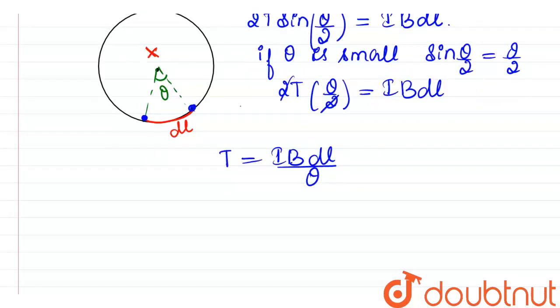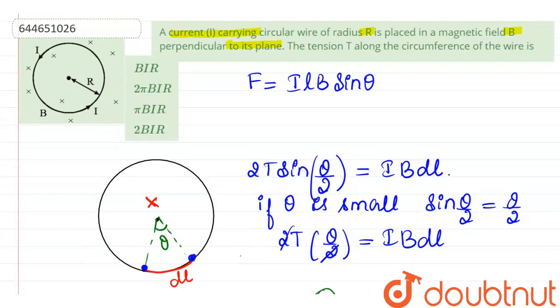Now DL by theta can further be rewritten as the radius of the circle. Therefore, the tension T will be equal to I B times R. So this will be the tension on the wire and hence the correct option is option number 1.